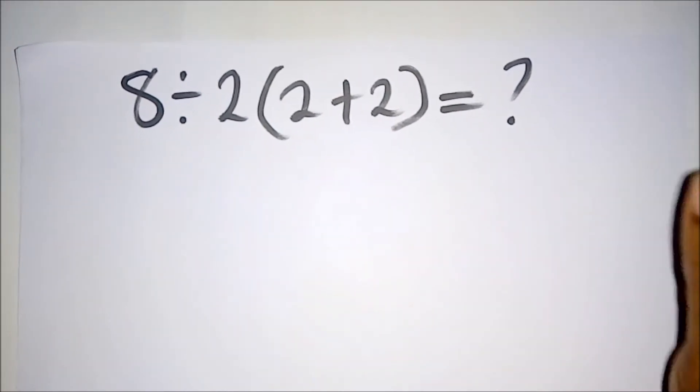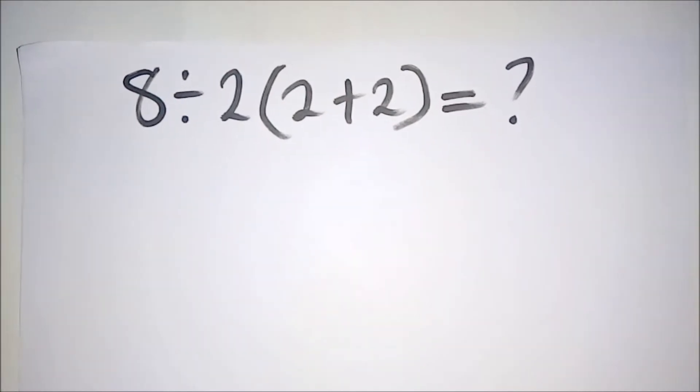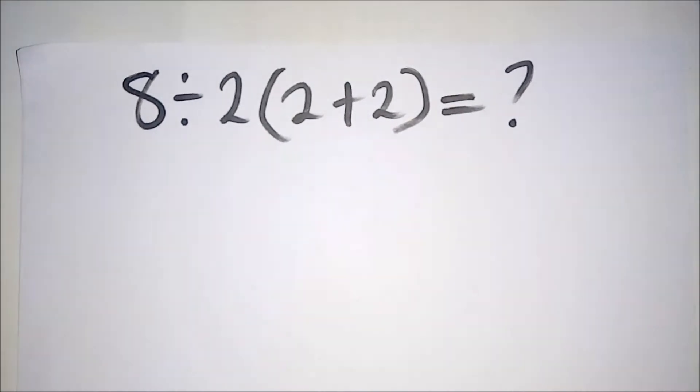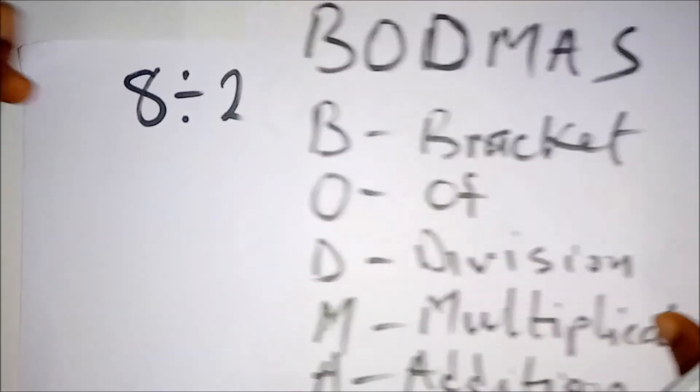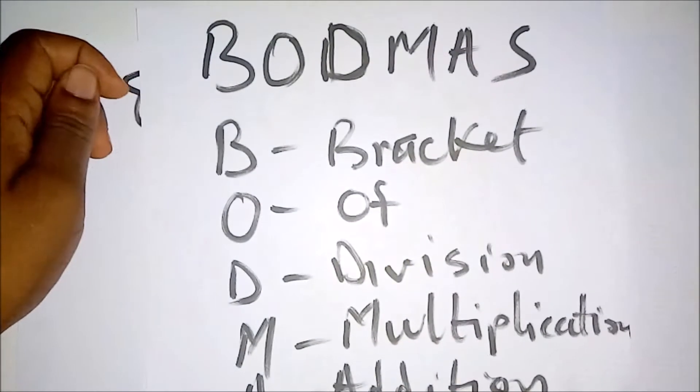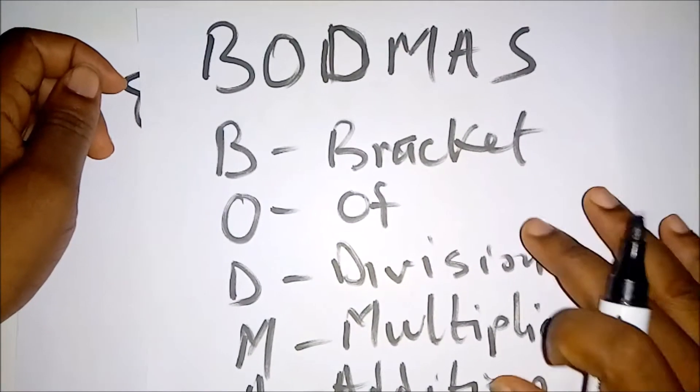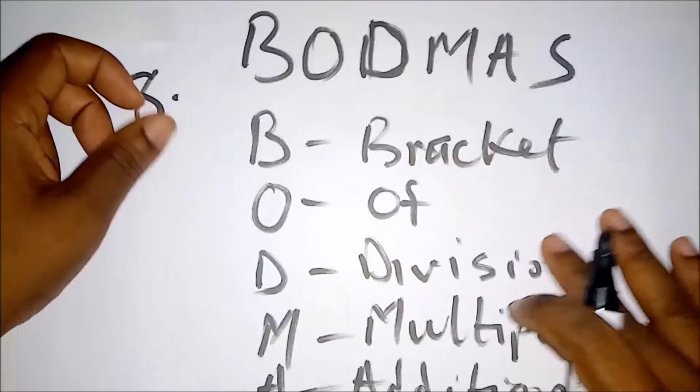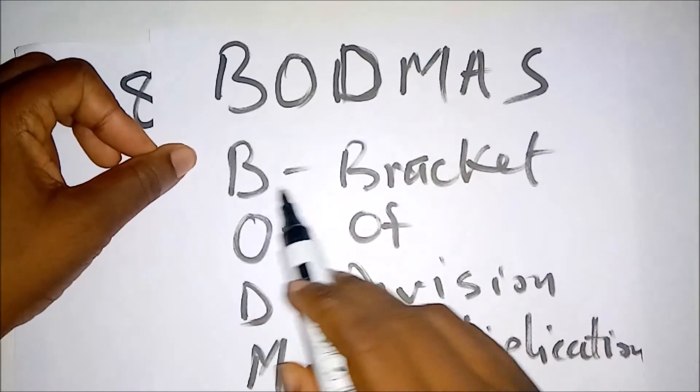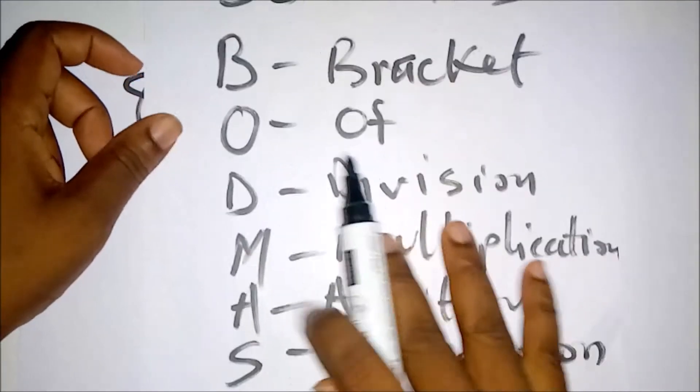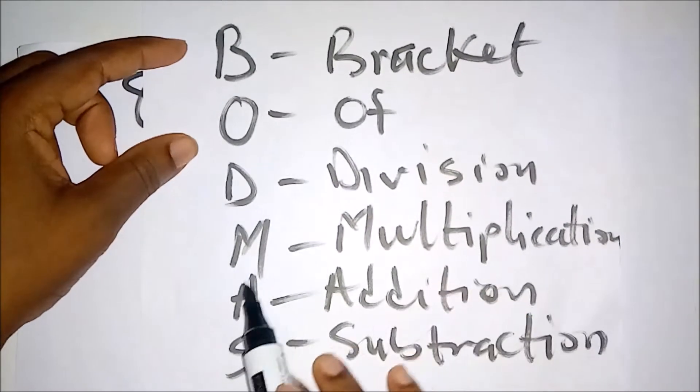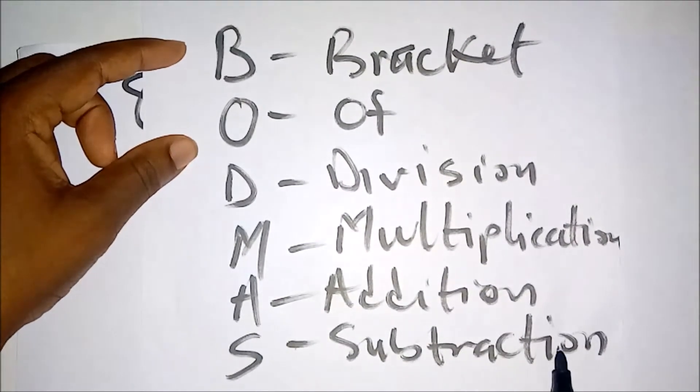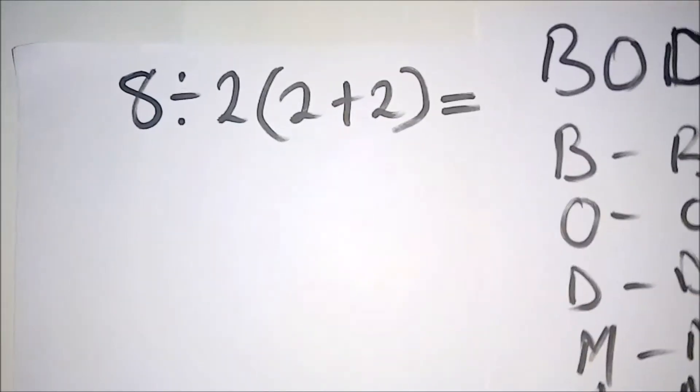I'm going to do this the African way. In our math curriculum here in Africa, we're taught when you have this particular problem we use BODMAS. I know in the U.S. they use PEMDAS, but for us here we use BODMAS. And what does BODMAS stand for? B is for Bracket, O is for Of, D is for Division, M is for Multiplication, A is for Addition, and S is for Subtraction.